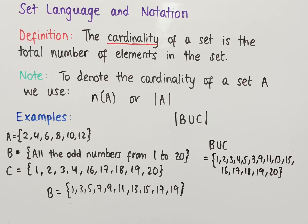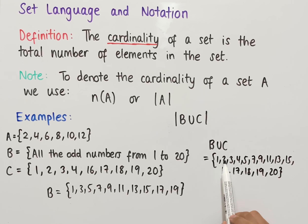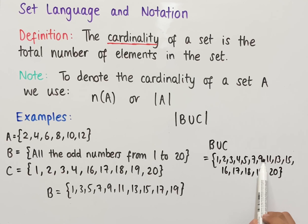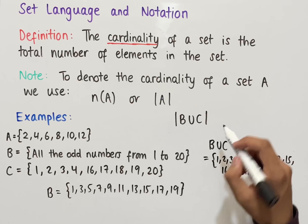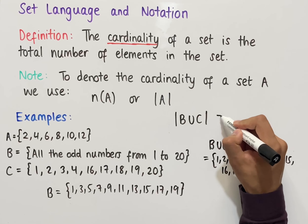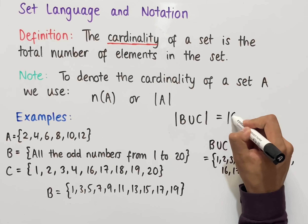To work out the cardinality we just need to count all of the elements: 1, 2, 3, 4, 5, 6, 7, 8, 9, 10, 11, 12, 13, 14, 15. So the cardinality of B union C is equal to 15.